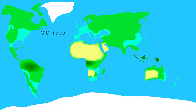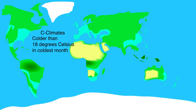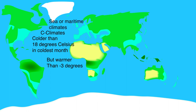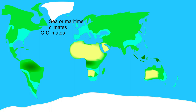Further away from the equator it gets colder, and here we find the sea climates. In sea climates the average temperature of the coldest month is lower than 18 degrees — otherwise it would be an A climate — but in the coldest month the average temperature is always warmer than 3 degrees below zero. It is useful to look at the coldest month because then you can quickly see that it is a sea climate. Sea climates are influenced by the sea, and are therefore also called maritime climates.